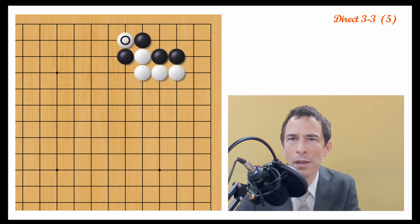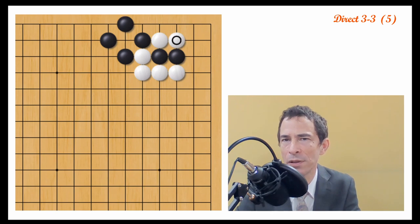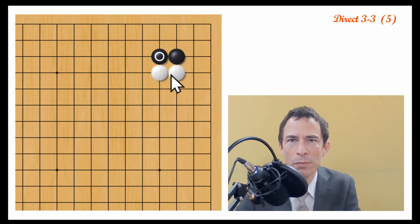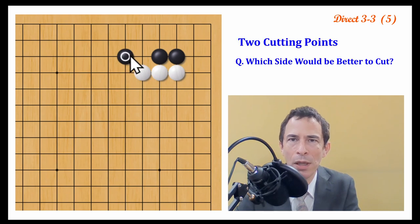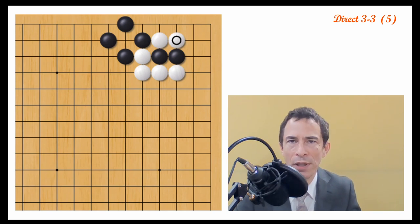So going back to the beginning here, if white with this move plays the double hane, then we had this joseki. This is one of the first video of this whole series where I talked about this joseki, which is it's even enough. But when white plays here and black plays here, if white pushes through and cuts this way, we'll have exactly the same result. So this will happen. And locally this is an even result in the opening of the game.